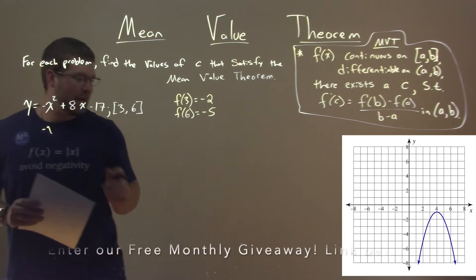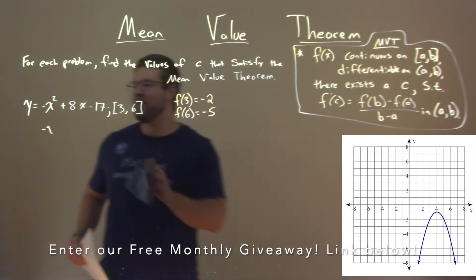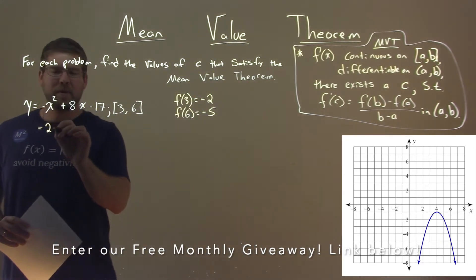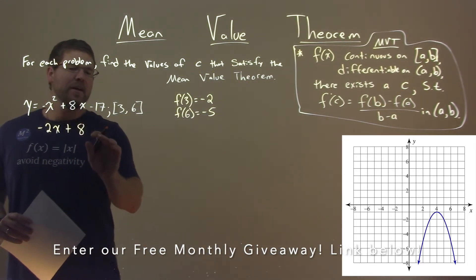Our derivative: negative 2x. I almost messed up the derivative right from the beginning. Not good. Power rule, negative 2x plus 8, and that's our derivative.